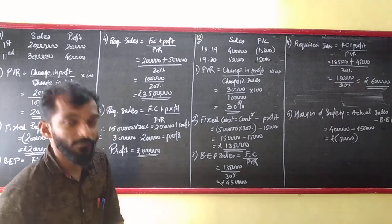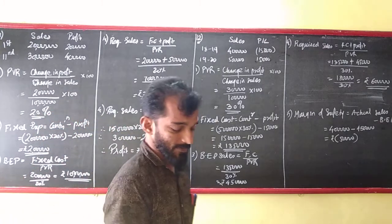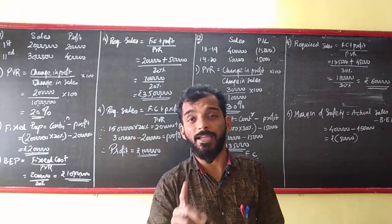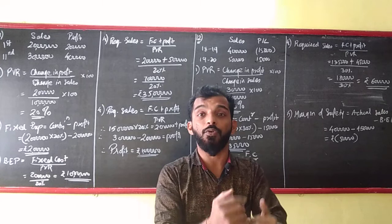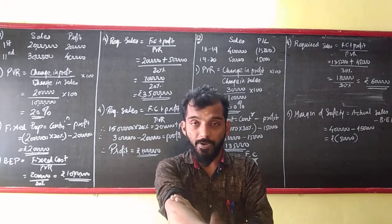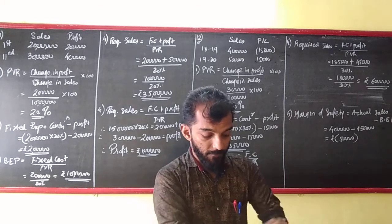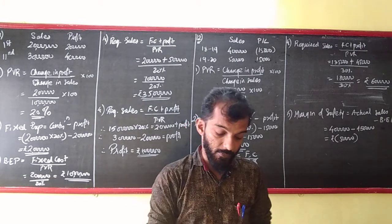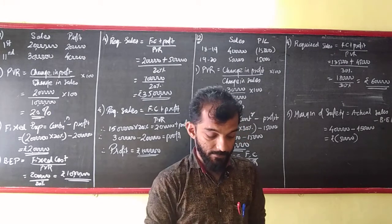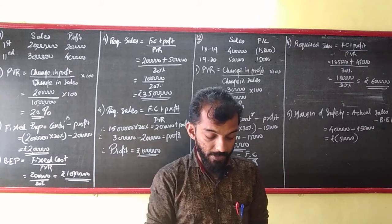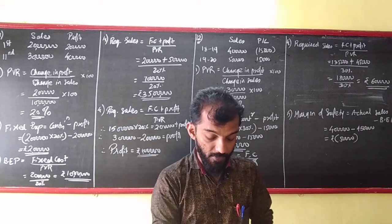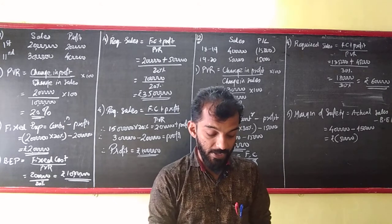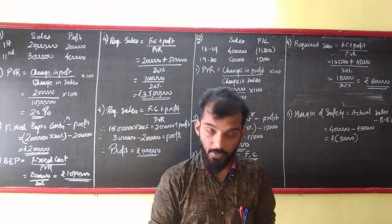Sum number 12. These are just for understanding and you are checking whether you are able to understand, whether you have understood or not, and whether you are able to apply the formulas correctly or not. Following figures have been extracted from the books: you are required to calculate PVR, fixed cost, BEP, sales to earn a profit of Rs. 45,000 and margin of safety for the period 18-19.